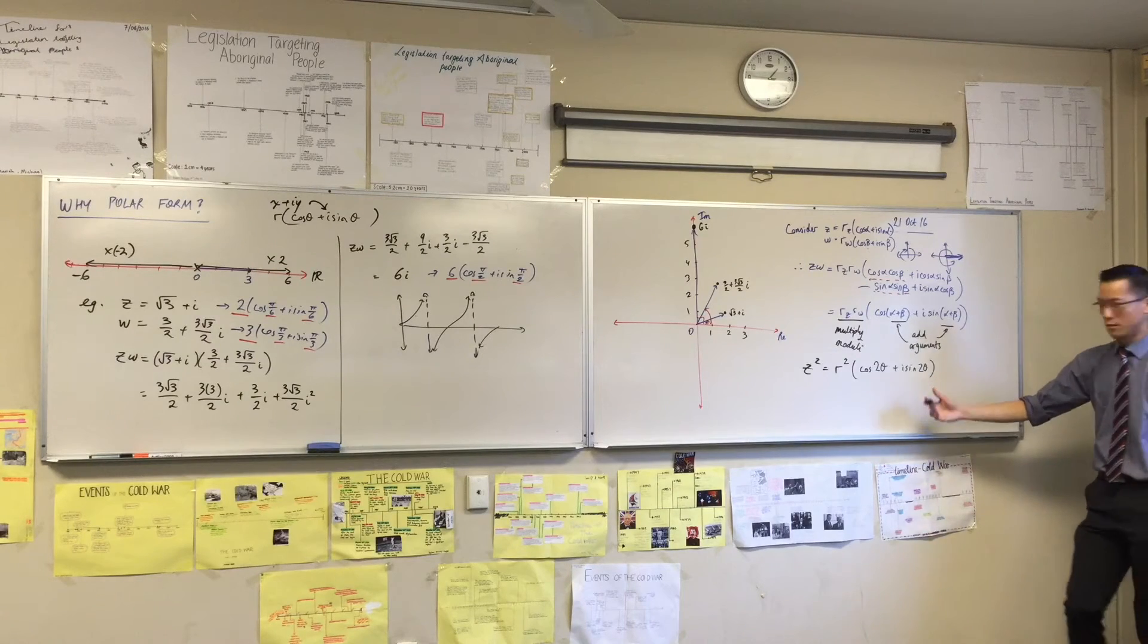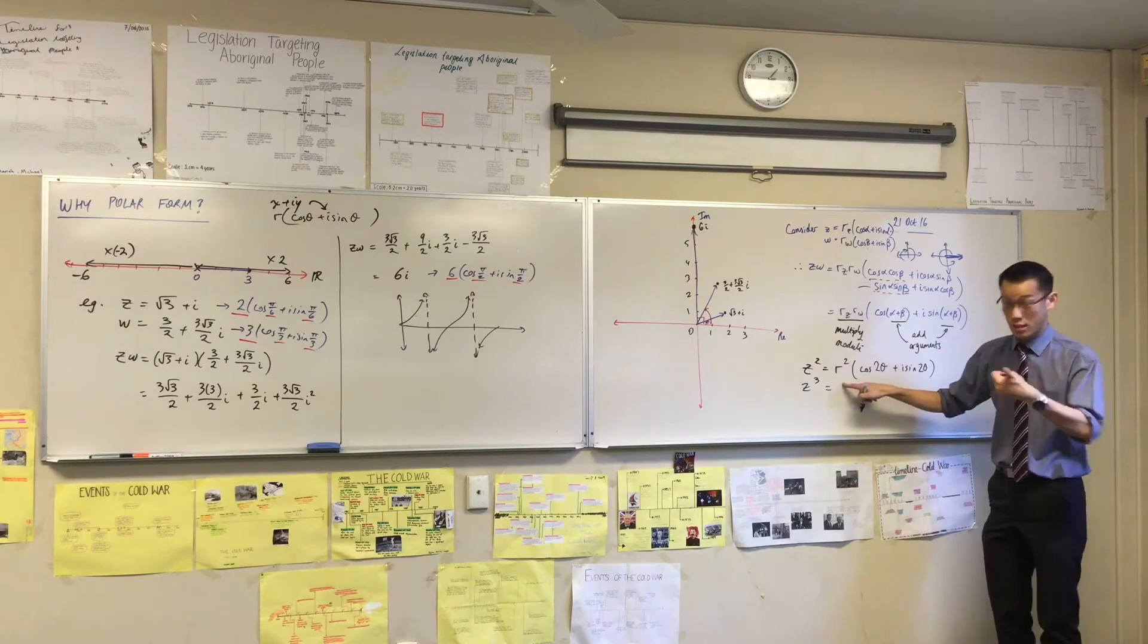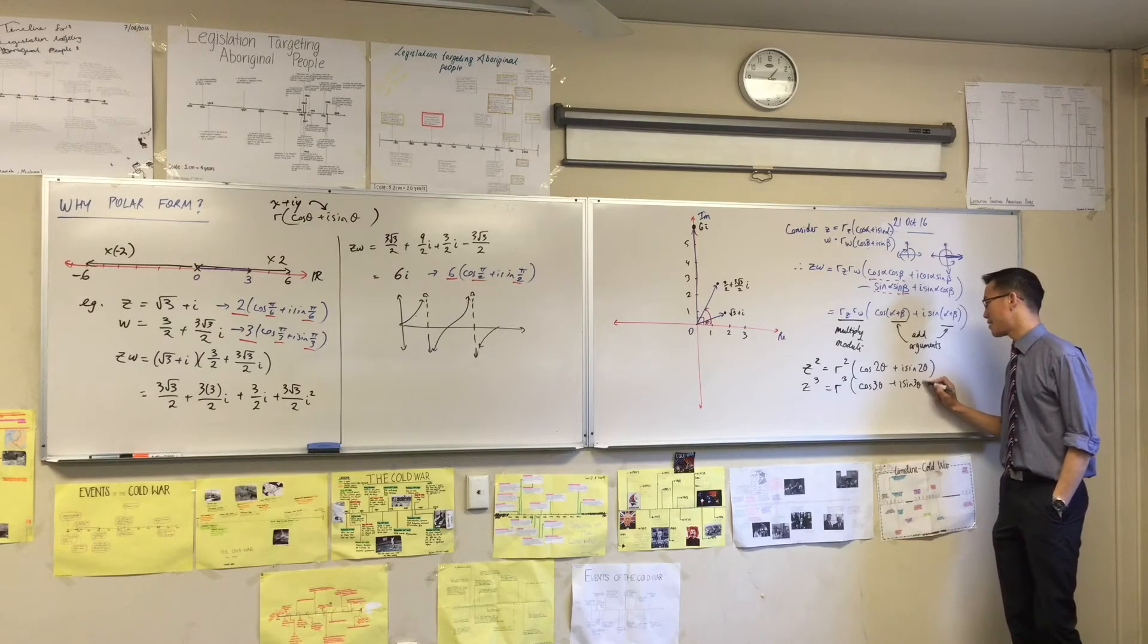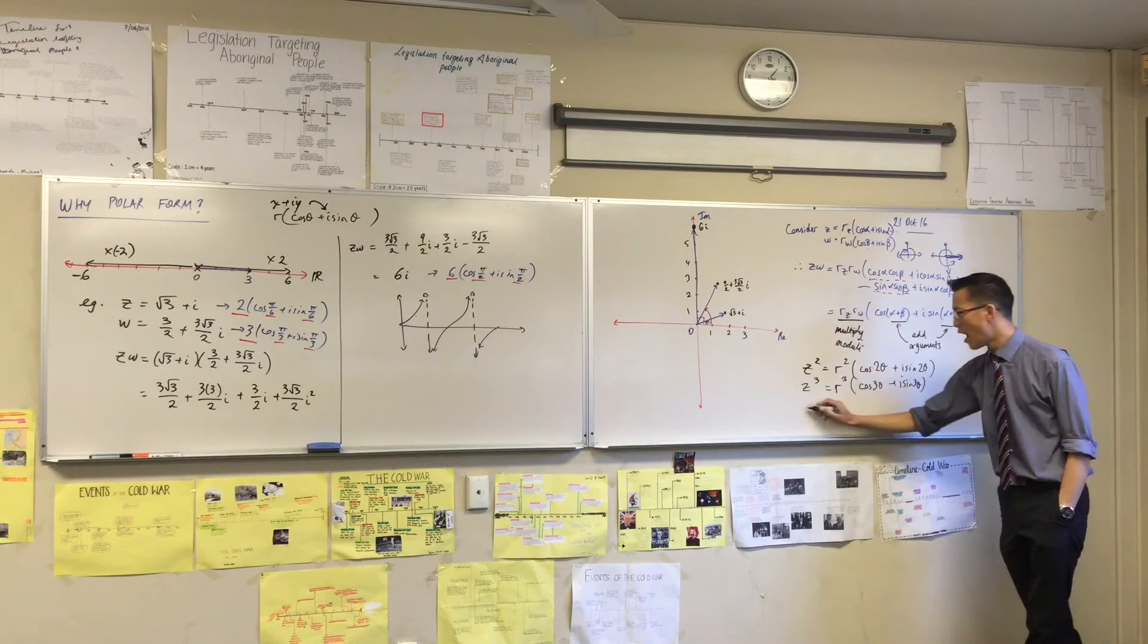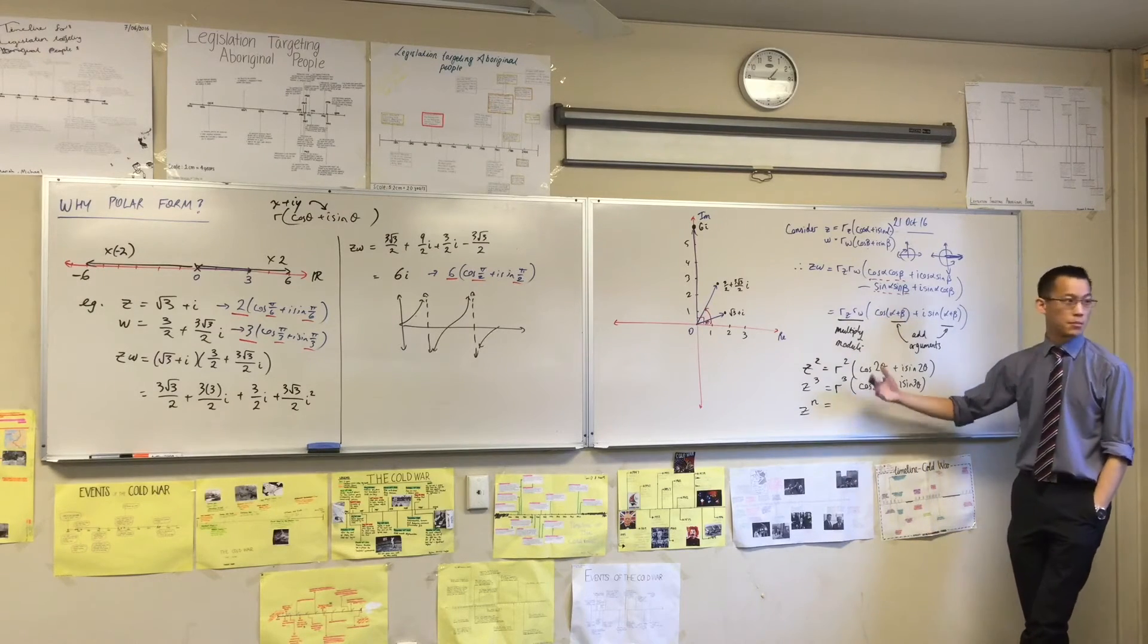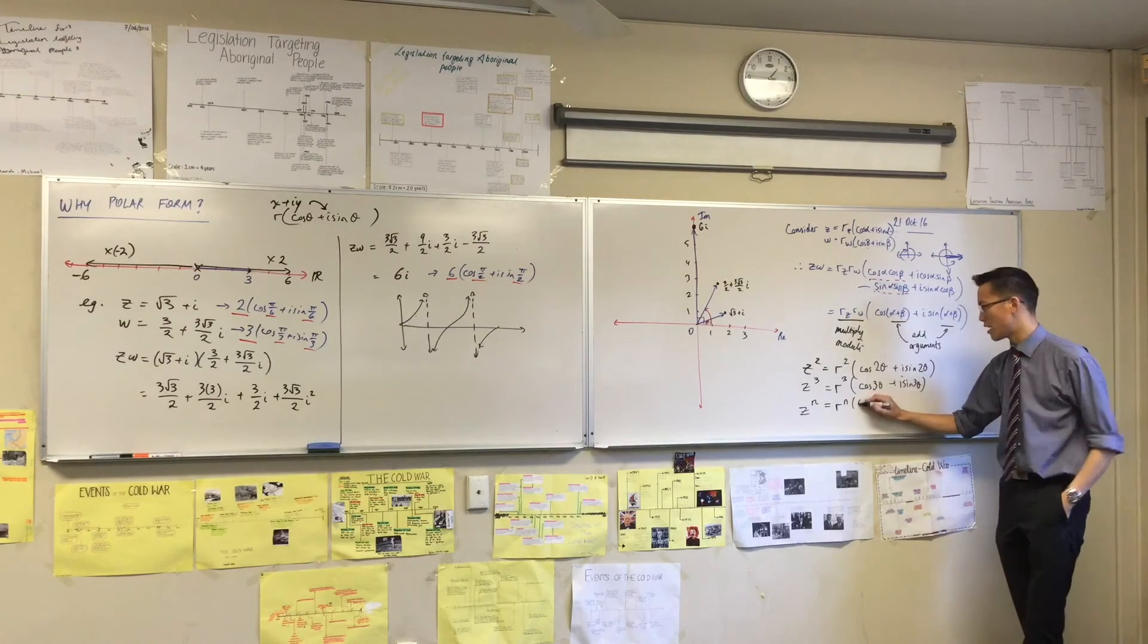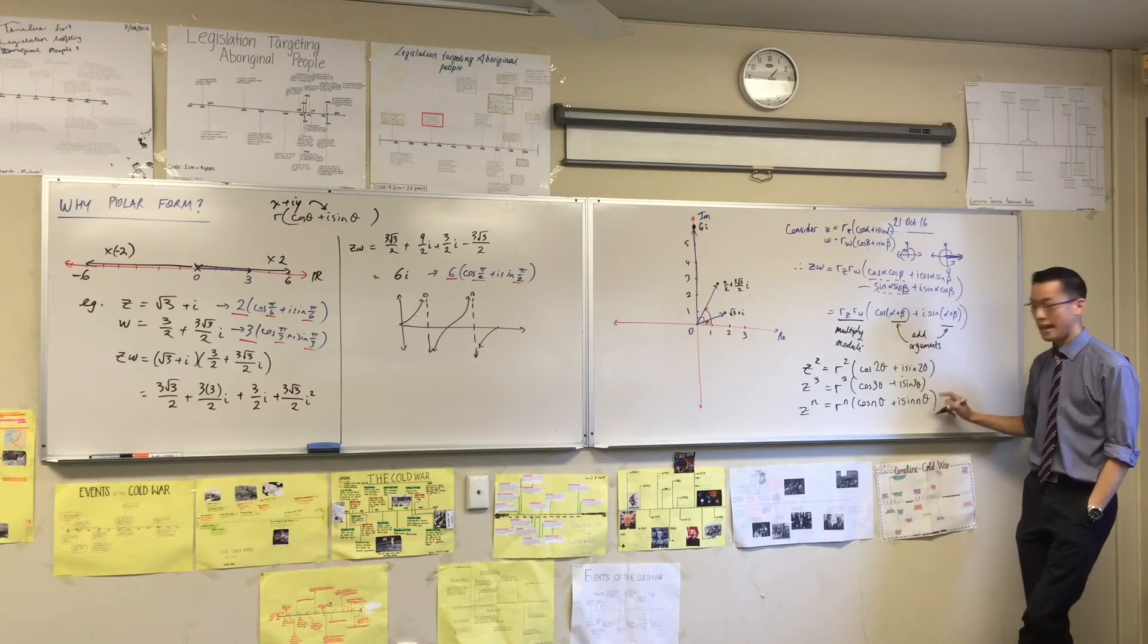That's what happens when you square. What happens when you cube? Again, you're going to multiply the radius three times. That's r cubed. And then you're going to add the angle three times, right? So you're going to get cos 3 theta. So I see a pattern here, right? Patterns. Mathematicians love patterns. I don't have to write 2, 3, 4, 5 forever. I can say for any number, for any power you like, you just have to multiply the modulus that number of times. And what do you do with the angles? You're just adding them repeatedly, right? So that's why you'll get n lots of that angle. And yes, you're about to get two n's next to each other. n lots of that angle.